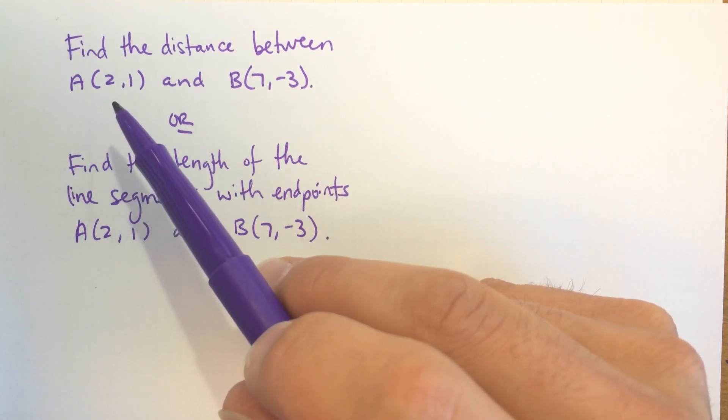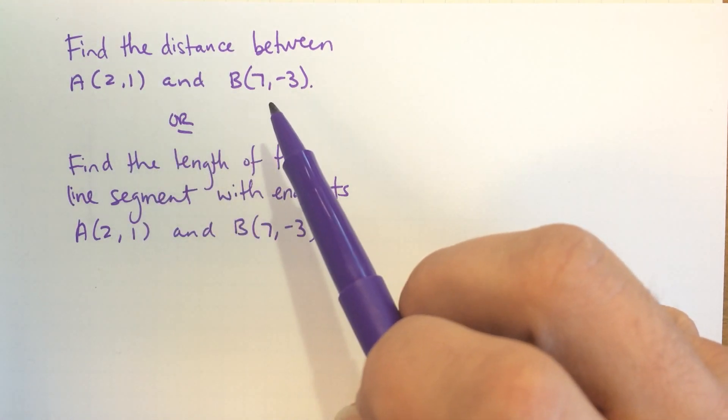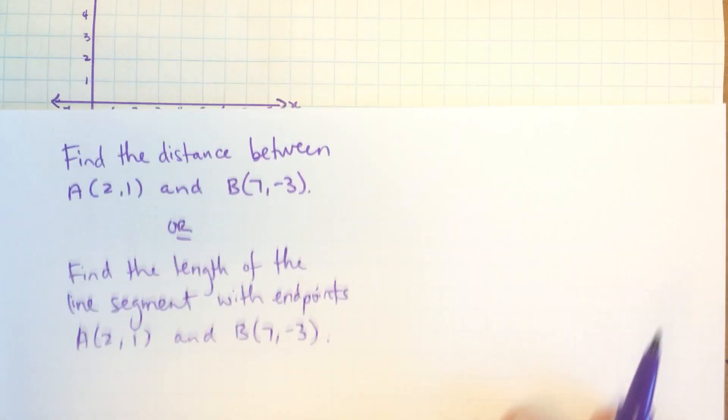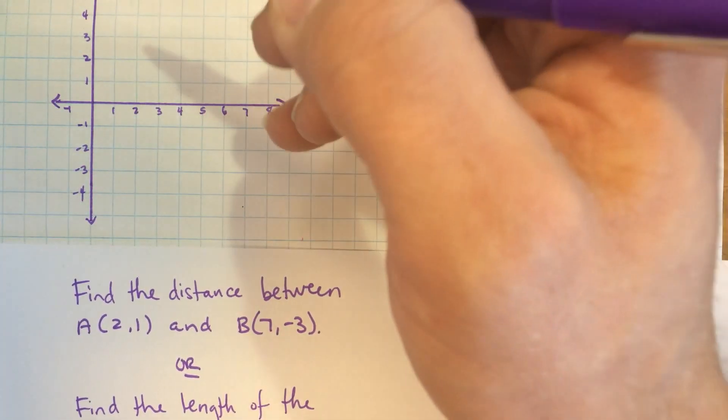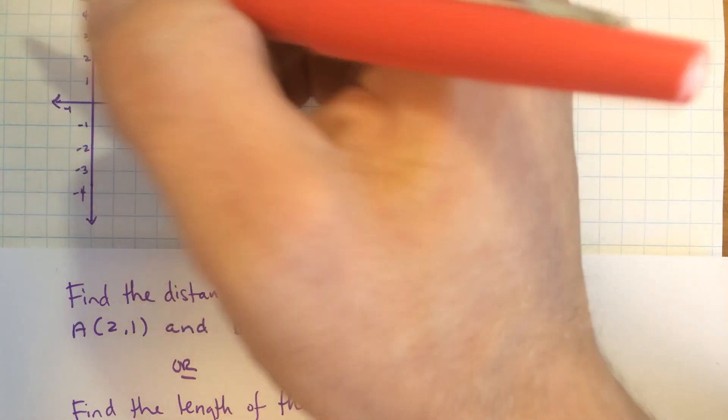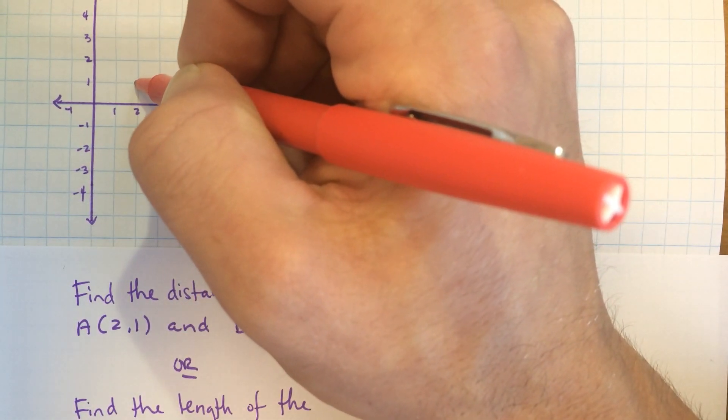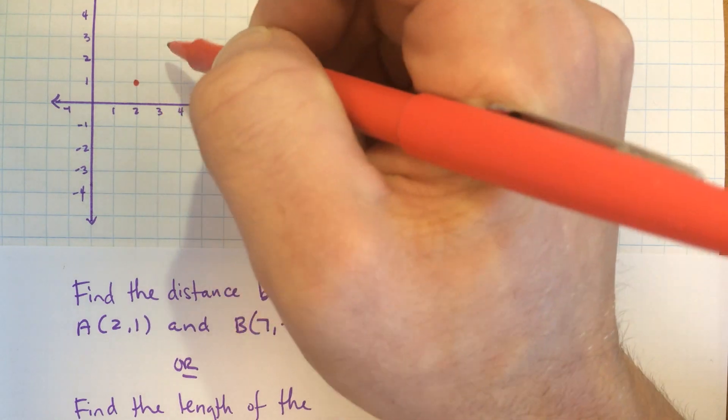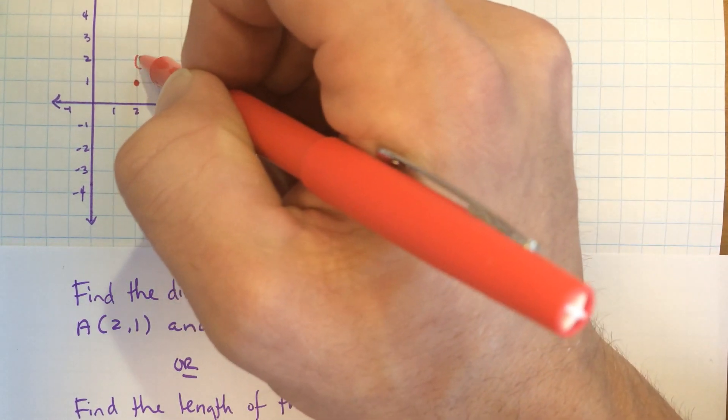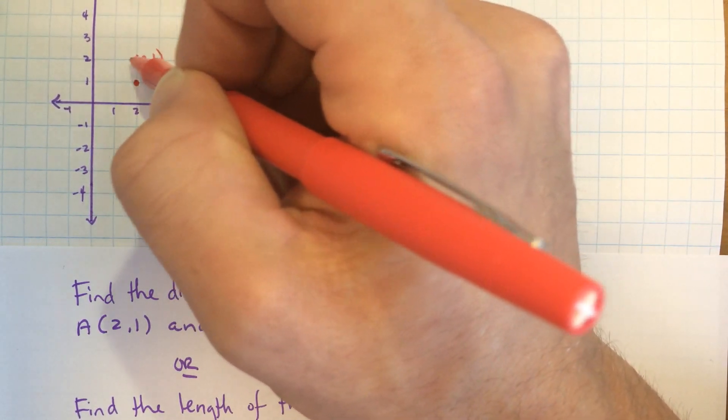So here we're going to use A(2,1) and B(7,-3). So on our grid here, I'm going to plot those two points. Let's do that in red. So 2 along the x-axis and 1 vertically. So that's the point A. I'll just label it here: 2, 1, point A.